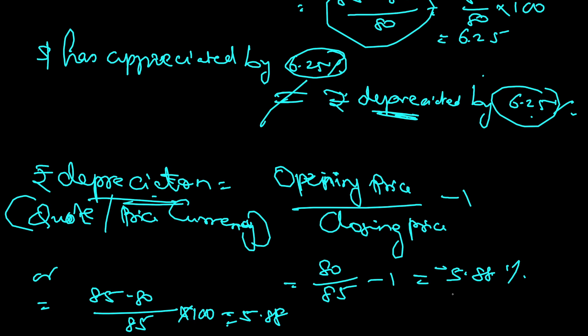So this is how I can calculate appreciation and depreciation. Rupee is actually depreciated by 5.88 percent and dollar is actually appreciated by 6.25 percent. This is how we are supposed to calculate appreciation and depreciation of currencies. Thank you for your time.